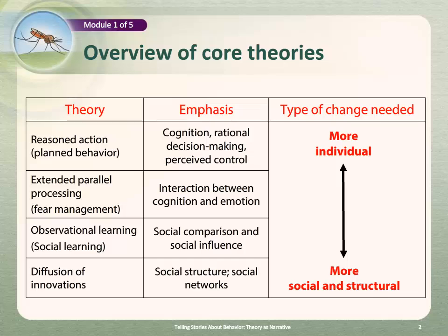The rest of this section will focus on those four theories, which ultimately share an emphasis on individual behavior, but emphasize different factors, different predictors, or combinations of factors that influence behavior. The four theories include the theory of reasoned action, or a newer variation called the theory of planned behavior — sometimes referred to as TRA or TPB — which focus primarily on cognitive or rational processes around decision making.